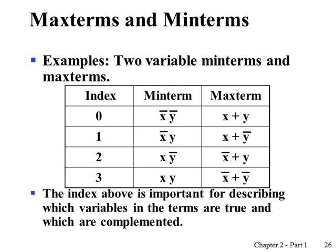The index of a minterm or maxterm is defined similarly but differently. Index zero for a minterm is NOT X, NOT Y. But index zero for a maxterm is X OR Y. The index is defined as a decimal by considering each variable as a binary bit pattern. If a variable is in true form, we consider it as 1; if complemented form, we consider it as 0. For example, for a minterm where both X and Y are complemented, binary 00 is decimal 0.